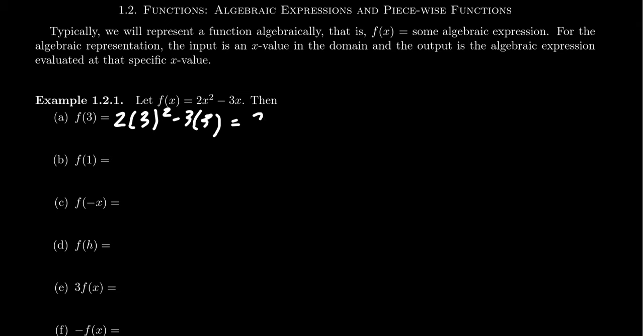3 squared is 9, 3 times 3 is likewise 9, 2 times 9 is 18, 18 take away 9 is therefore 9. And so then this algebraic statement tells us that the function evaluated at 3 gives us 9. So this function will send the number 3 to the number 9. And that's how it does it, using the formula provided.